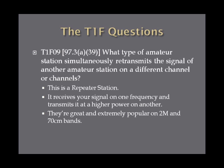What type of amateur station simultaneously retransmits the signal of another amateur station on a different channel or channels? This type of station is called a repeater station. You transmit a signal on a certain frequency, the repeater picks it up and retransmits it on an offset frequency — usually at higher power — giving you much better range. Repeaters are extremely popular on 2 meters and 70 centimeters, and fairly popular on 6 meters and 10 meters.